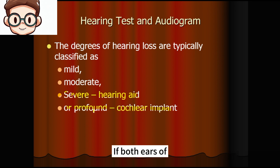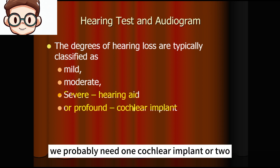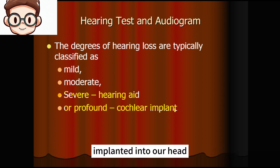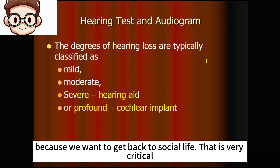If both ears unfortunately fall within the profound hearing loss range — above 90 dB, which is very close to deaf — we probably need one or two cochlear implants. Because we want to get back to social life, that is very critical.